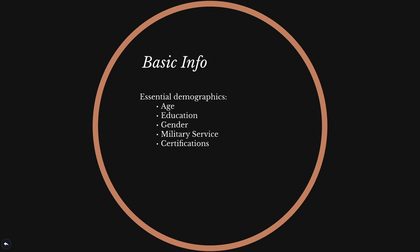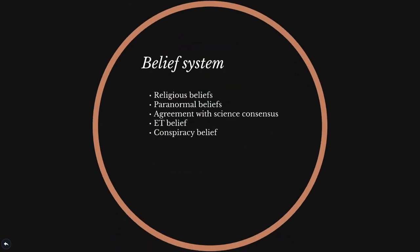Section 3 is belief system. We want to know what sort of things people think are probably true or not true, including their beliefs in the supernatural, paranormal, and conspiracy theories. We also ask them to indicate their agreement with well-established science.